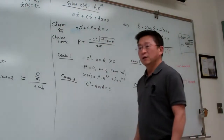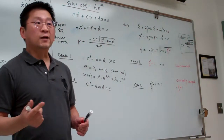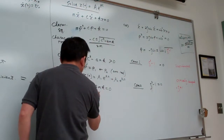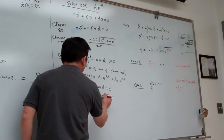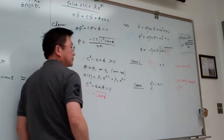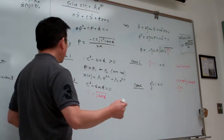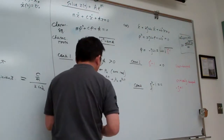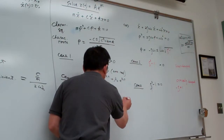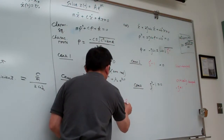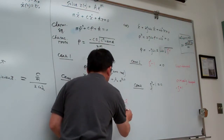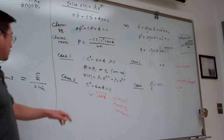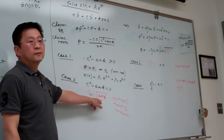From this condition we can define the critical damping constant. Under this situation, C_cr = sqrt(4mk). So if someone asks you to calculate the critical damping constant, you simply plug into this formula and do the calculation.